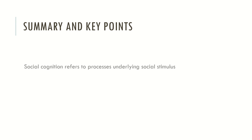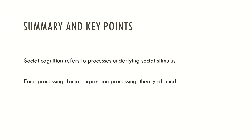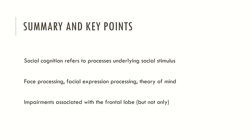To recap: social cognition refers to processes underlying social stimulus perception. It encompasses face processing, facial expression processing, and theory of mind. Impairments in social cognition tend to be associated with the frontal lobe, but social cognition deficits are not attributable exclusively to the frontal lobe.